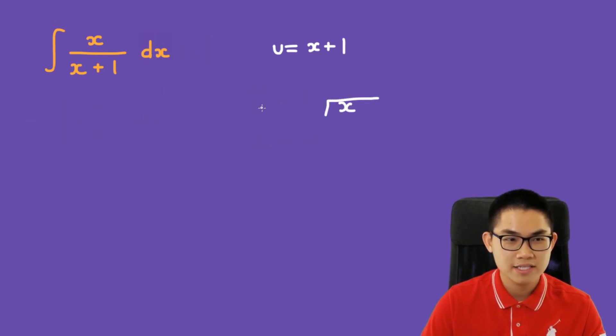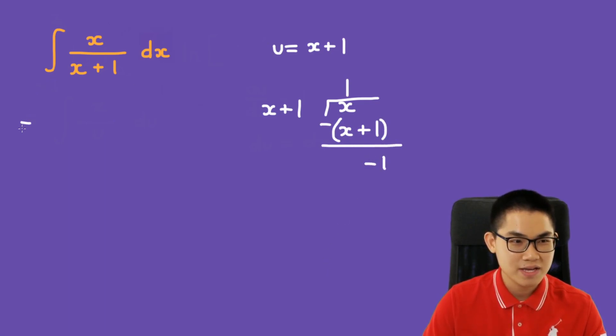So x divided by x plus 1, so we have 1, and then 1 times x plus 1, right? And then you subtract, then you get minus 1.